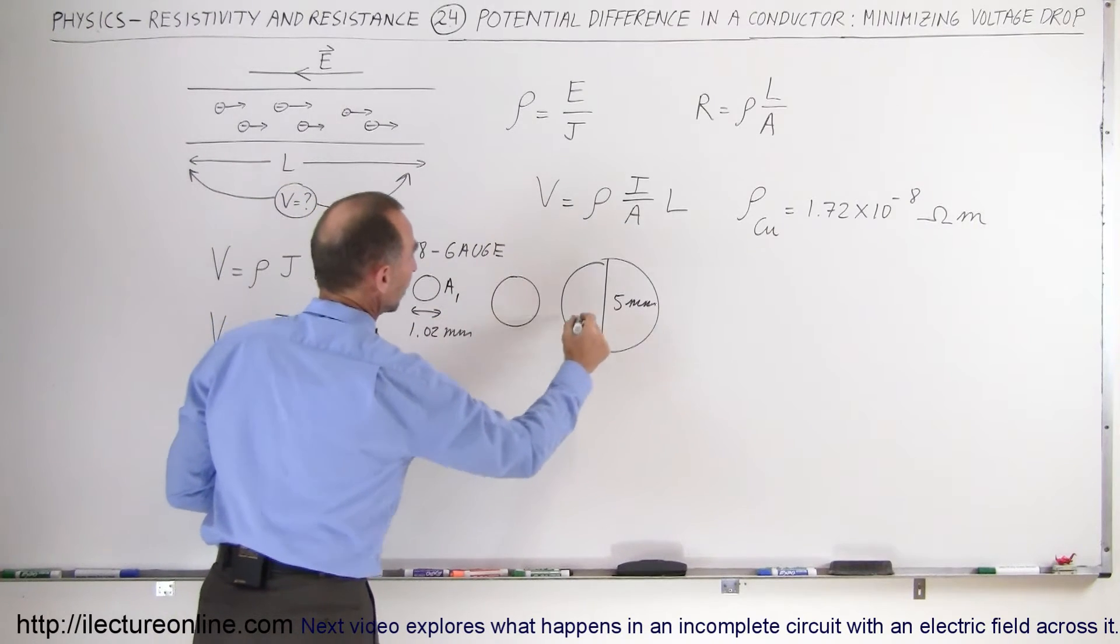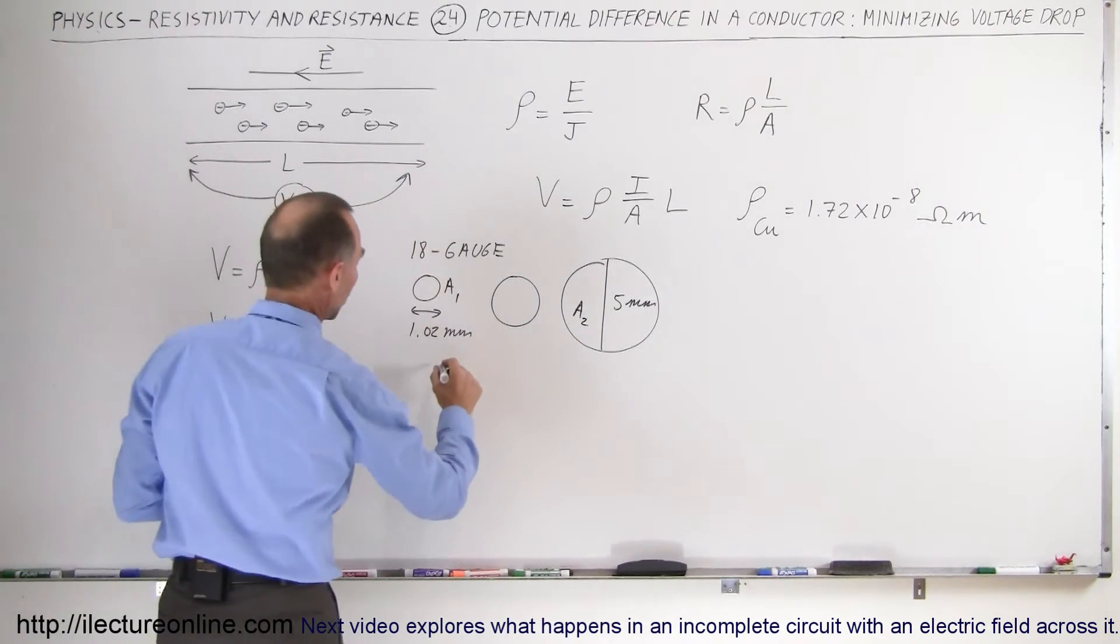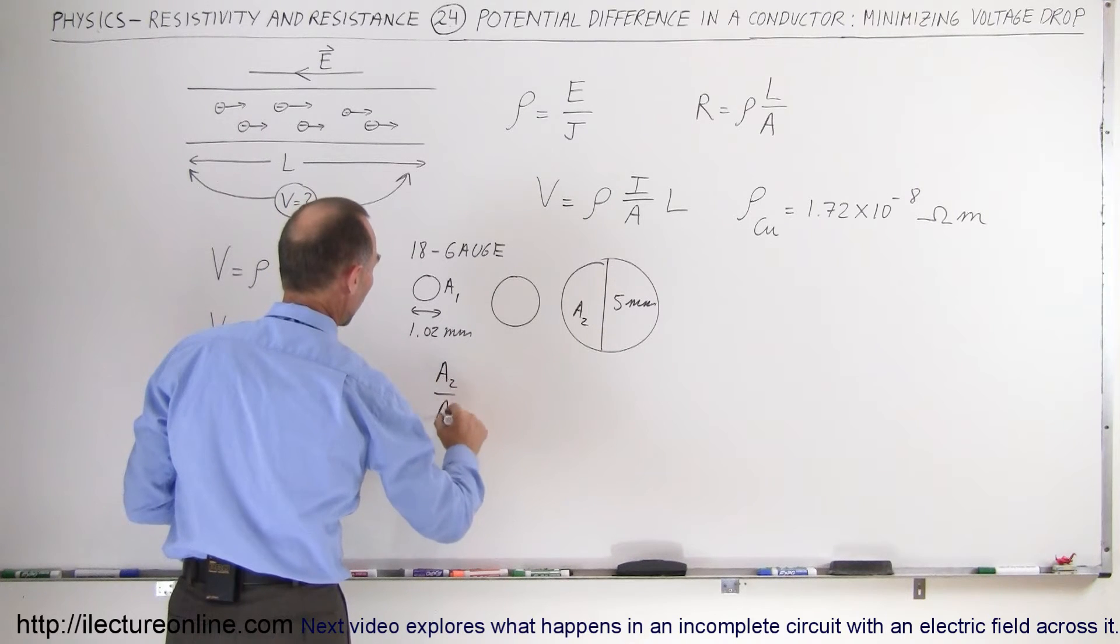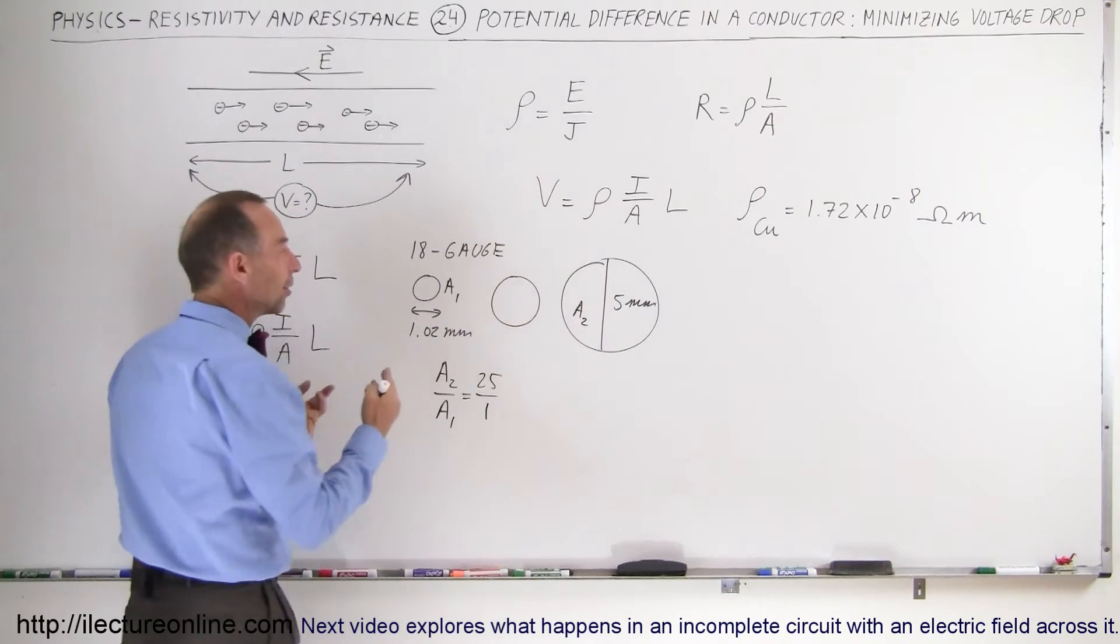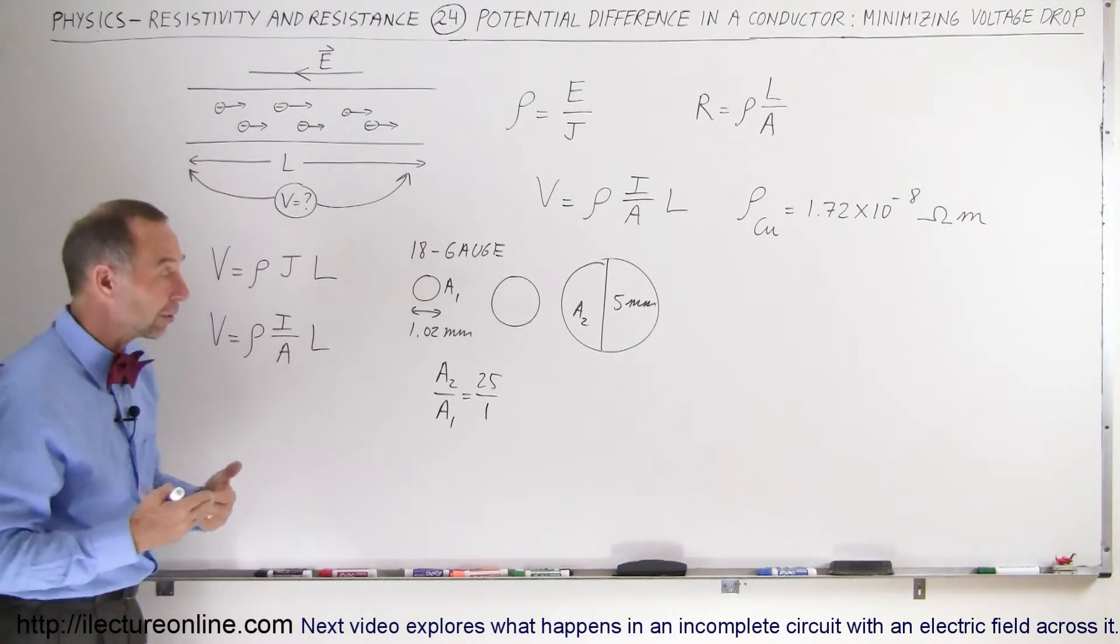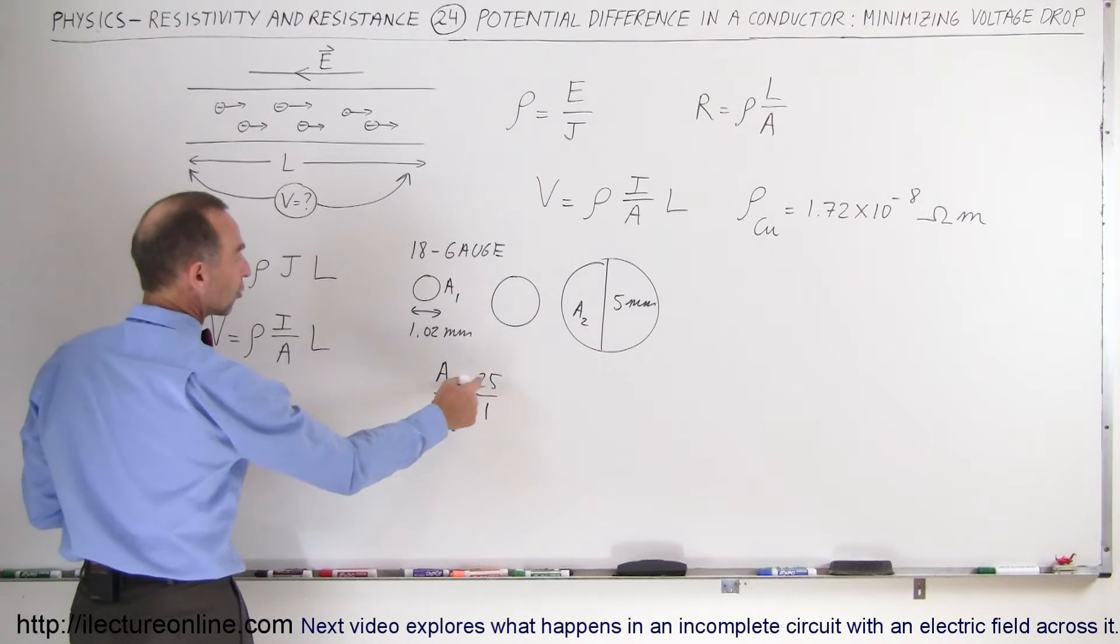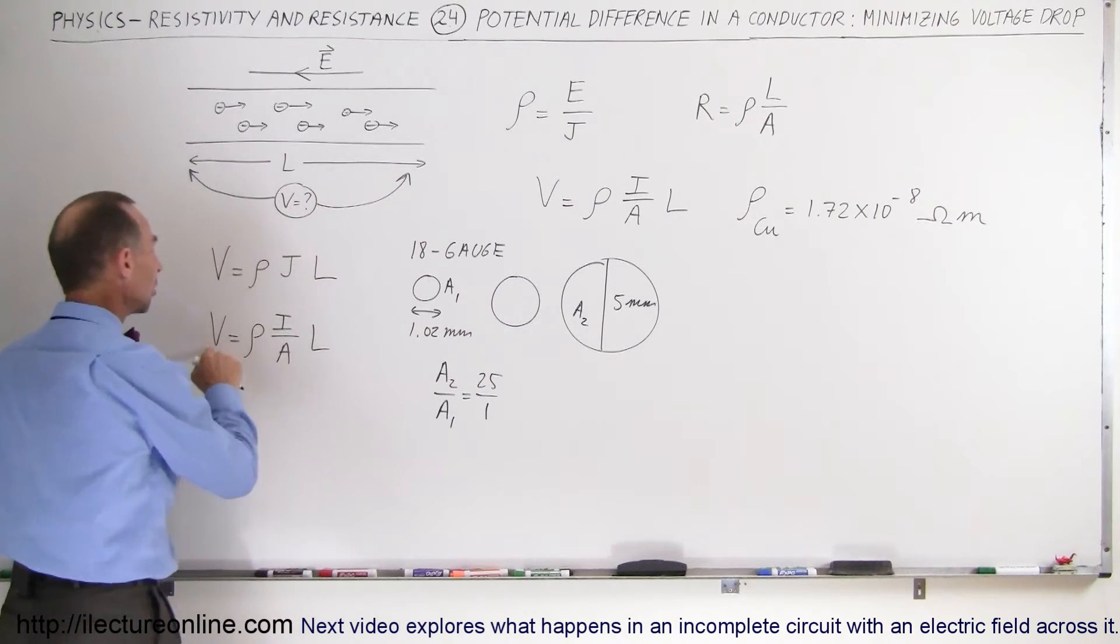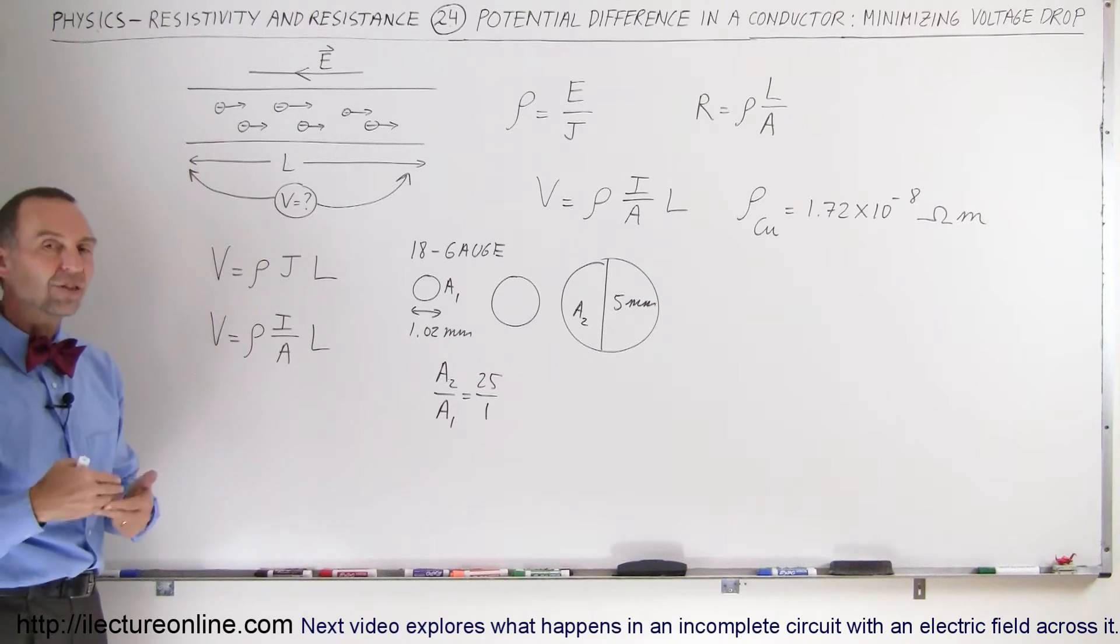Then you can see that the ratio of A2 to A1 is equal to 25 to 1, because the area is proportional to diameter squared. So if the area is 25 times as big, the potential drop across the wire is only 1/25th what it was before.